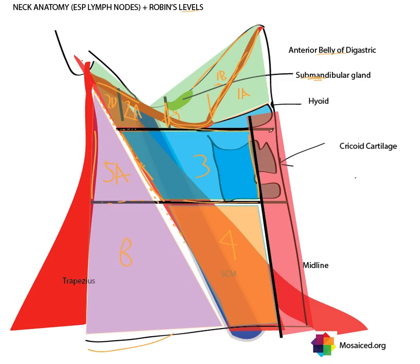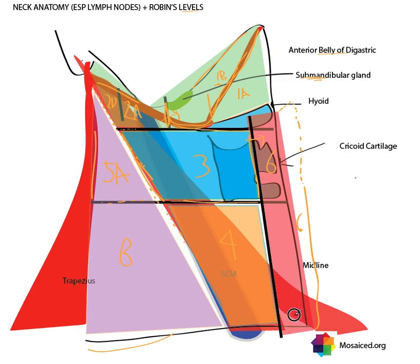There are seven Robbins levels in total, and levels six and seven are more anterior. Level six is medial to the lateral border of the sternohyoid — it's essentially the anterior compartment of the neck, continuous with the sternohyoid muscle on the other side. Level seven includes any lymph nodes behind the suprasternal space, behind the manubrium, that extend down into that region.